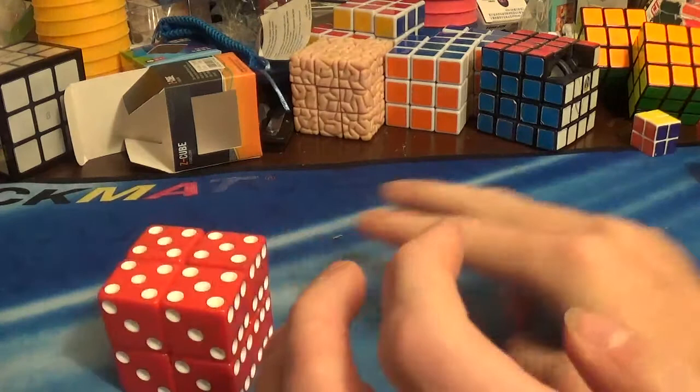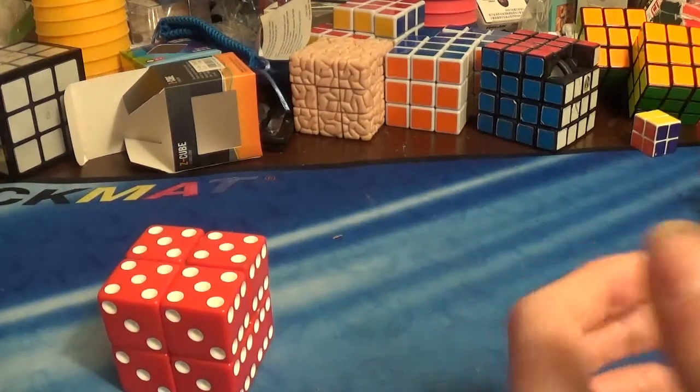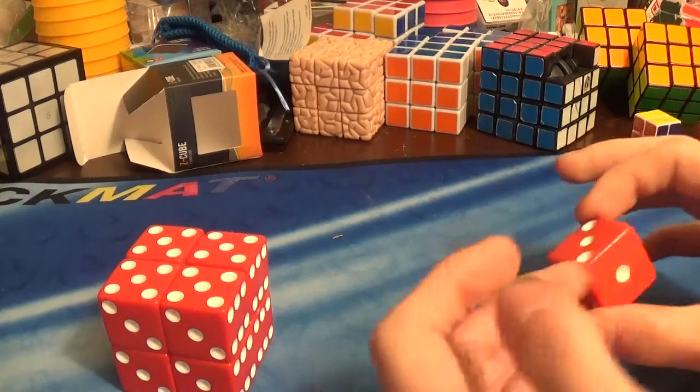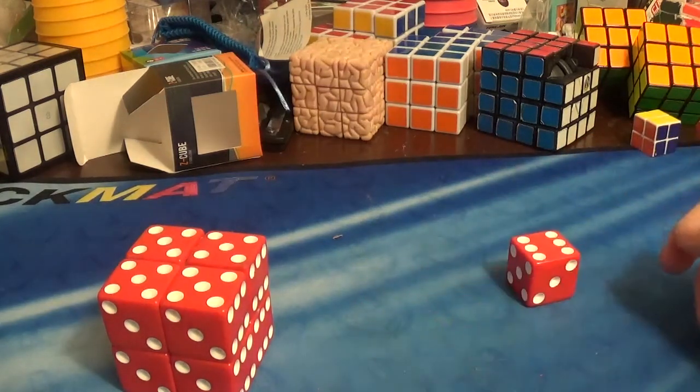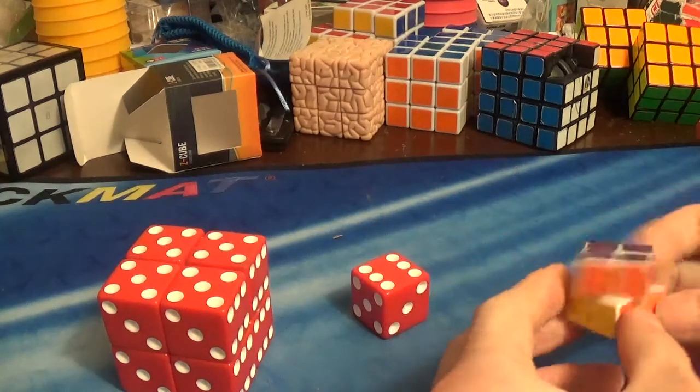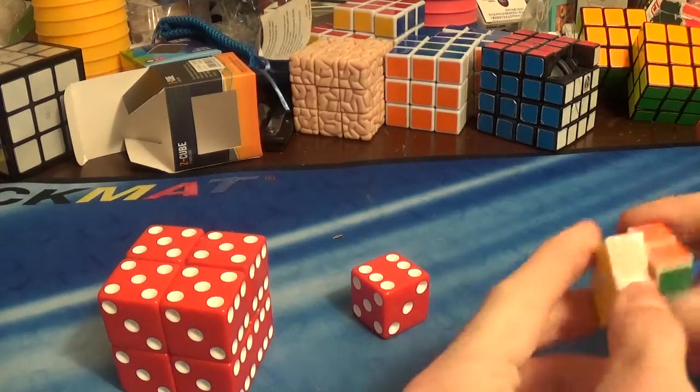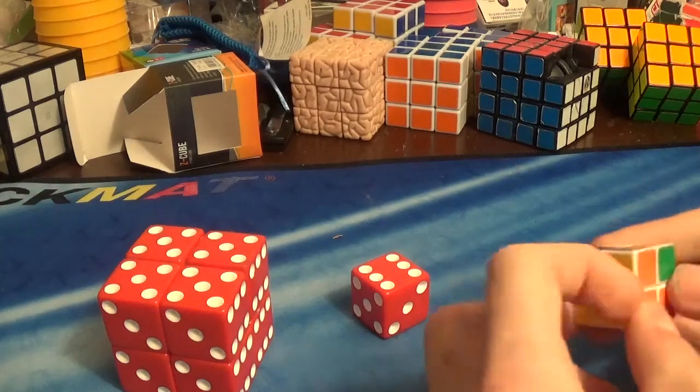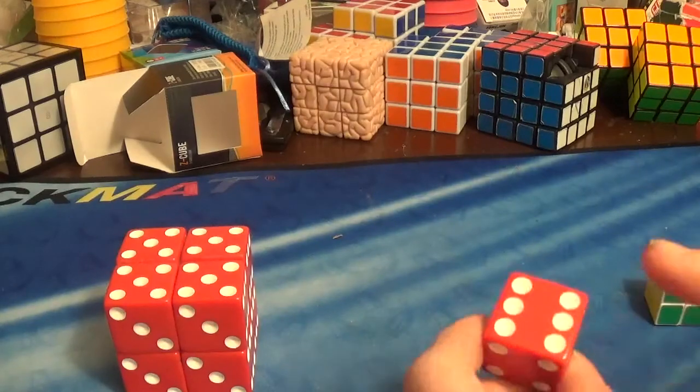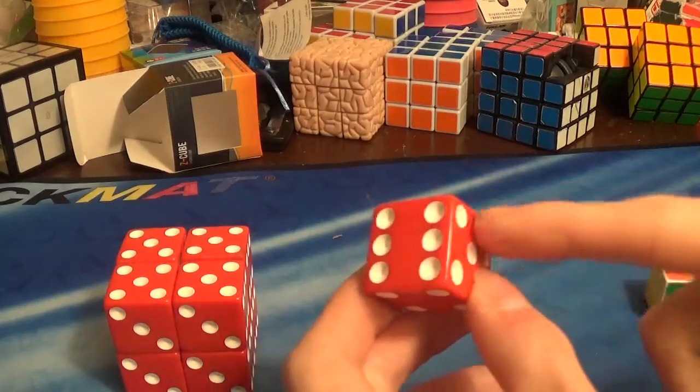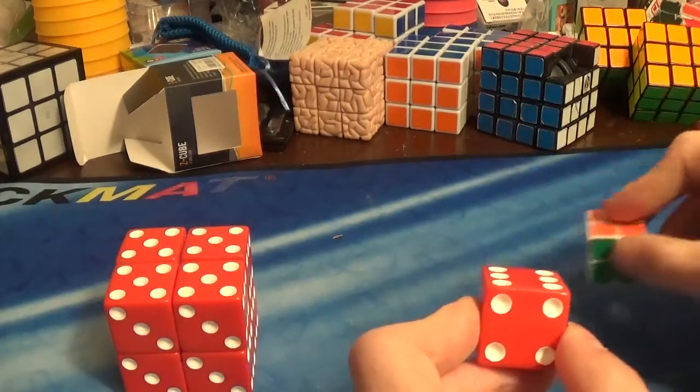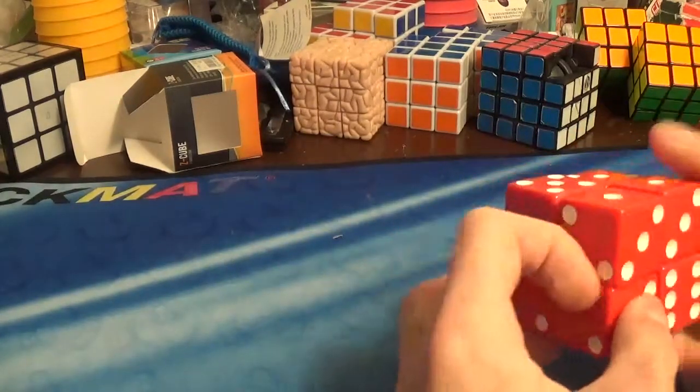Basically what I did was a while back I bought some dice, like these big dice that are like 25mm big and a 2x2 like this one, a mini keychain one. And what I did was I had to carve out one fourth of these dice, one fourth of the dice, and then glue it onto the 2x2 to make it a fully functional working 2x2.